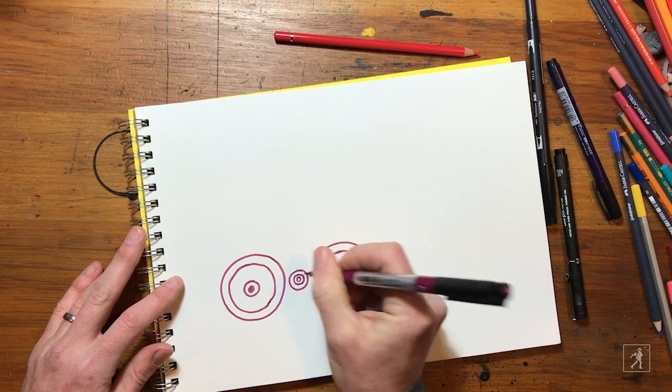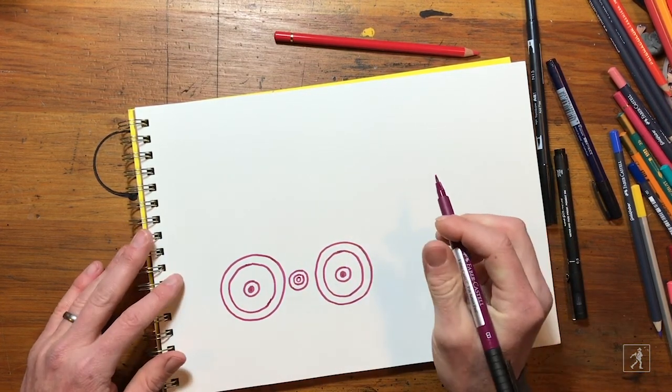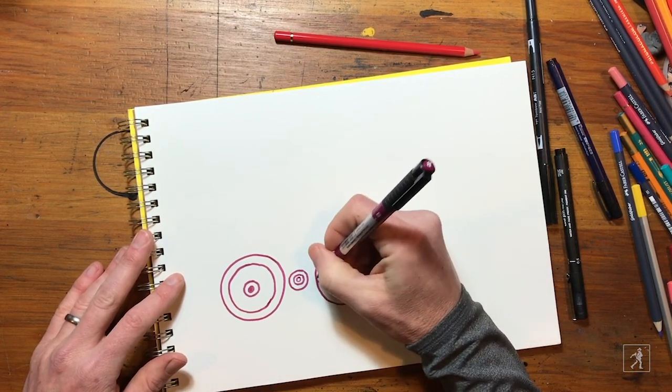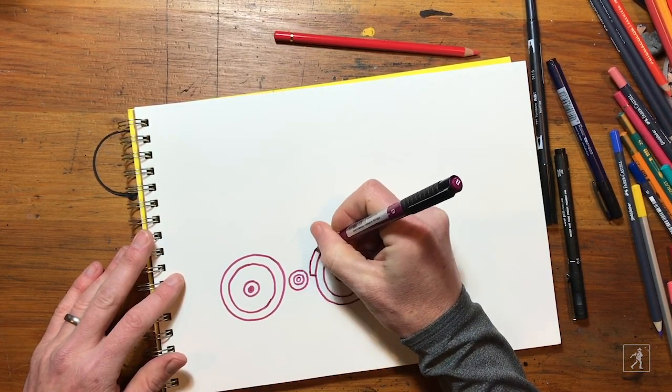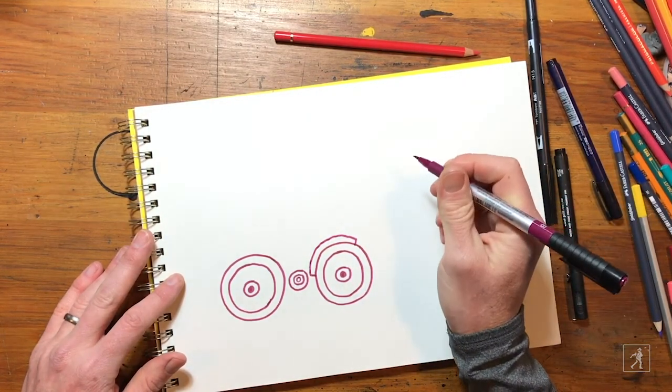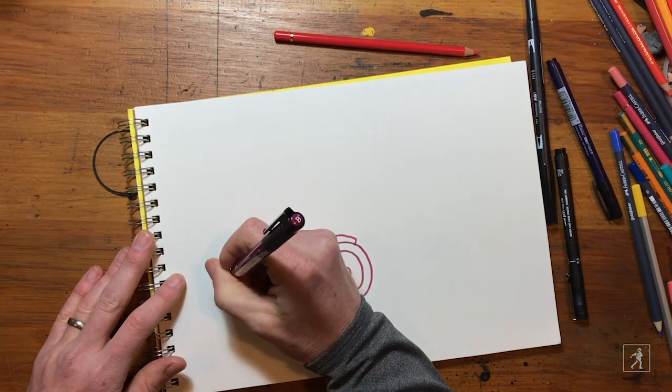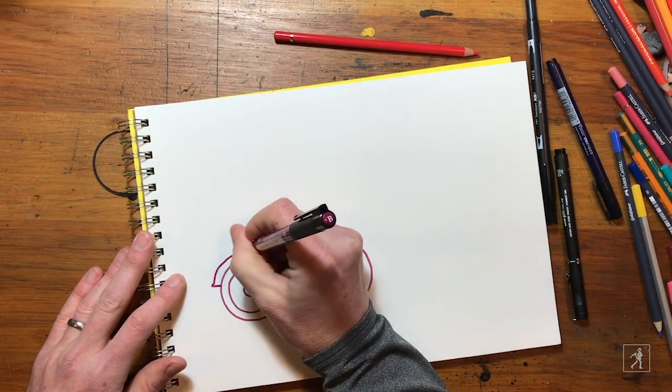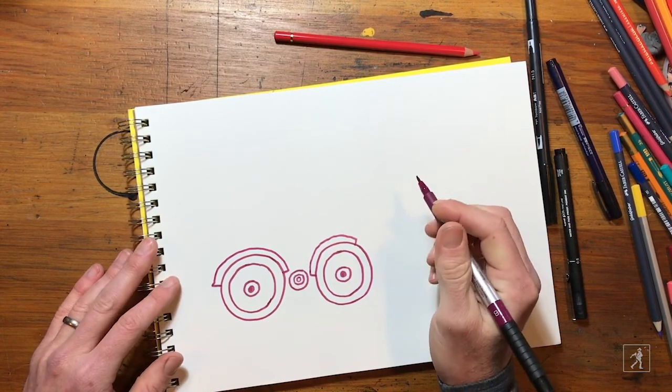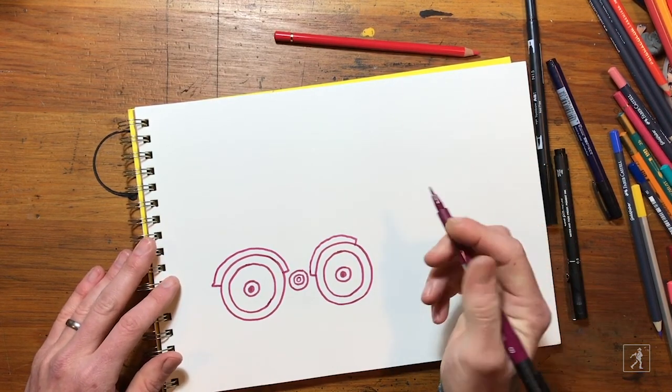Then we have what are called partial circles—they're really the fenders of the bike. It goes up a bit like this for the front fender, and the rear fender's a little longer, it goes more that way.